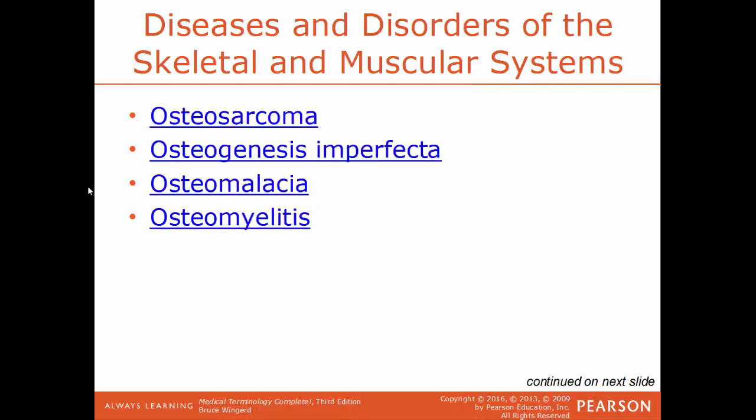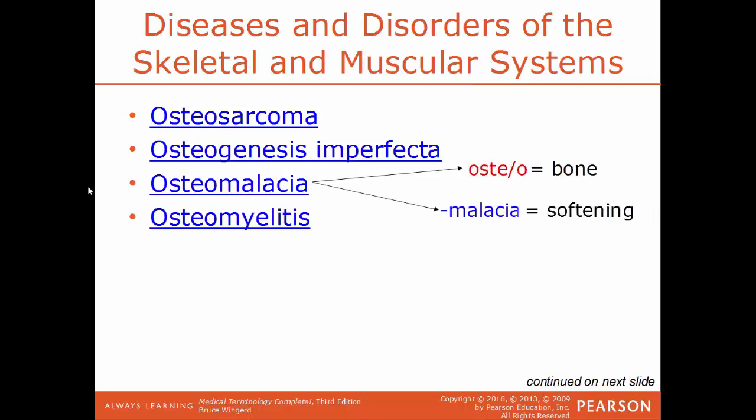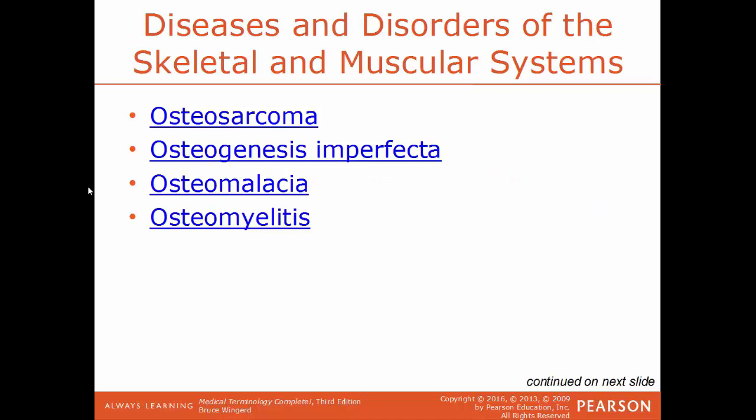Osteosarcoma is a bone cancer more commonly found in young adults and children. Osteogenesis imperfecta is a genetic disorder where bones are incredibly brittle — children born with it are called 'children of glass' because even the slightest movement, such as coughing or sneezing, can break multiple bones. Literally: imperfect formation of bones. Osteomalacia is the softening of bone — osteo means bone, malacia means softening. Osteomyelitis is inflammation of the bone or bone marrow.